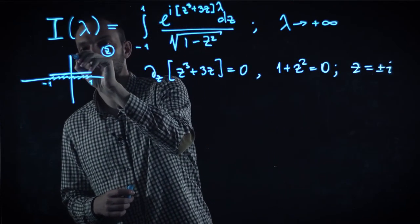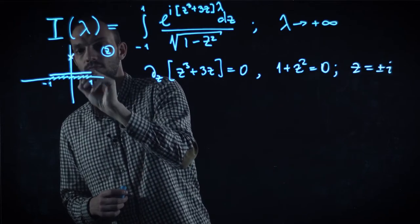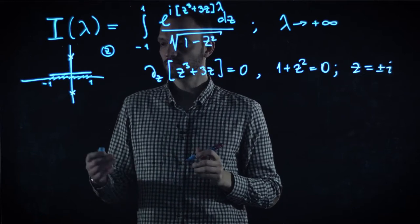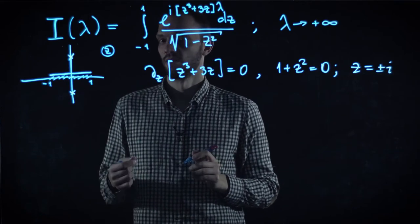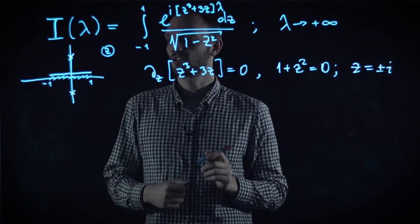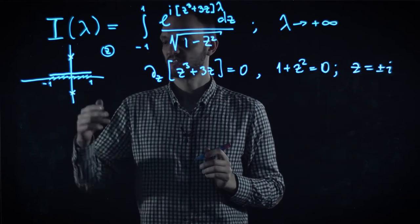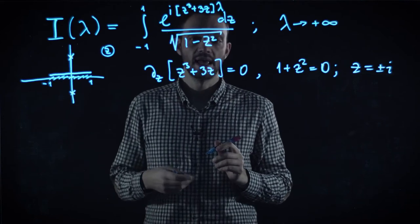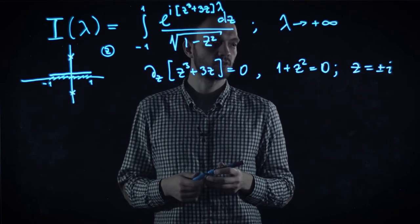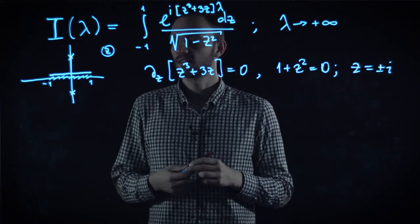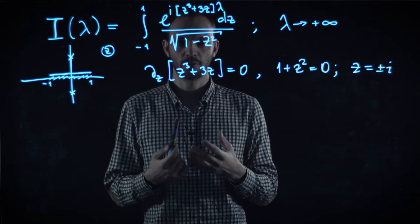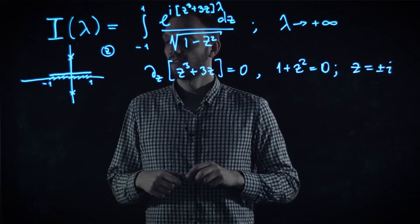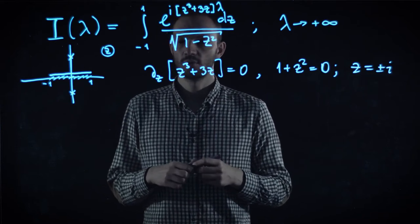Here are the saddle points. And we need to understand how exactly we should deform our original integration contour to something which passes through the saddle points. We don't know in advance which one we have to choose and how to evaluate the leading term of the asymptotic expansion. So, let us formulate a general rule, which we will now apply for this particular case.